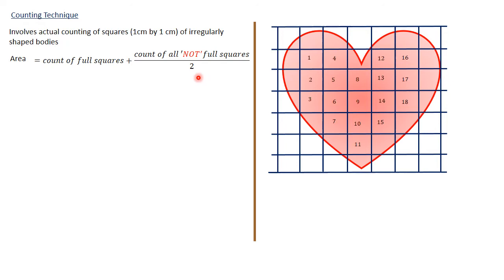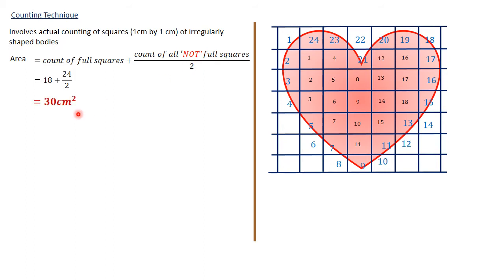In the given question, the full squares are numbered from 1 up to 18, and the ones that are not full are numbered from 1 up to 24. Therefore the total area would be 18 plus 24 over 2, which gives an answer of 30 centimeters squared.